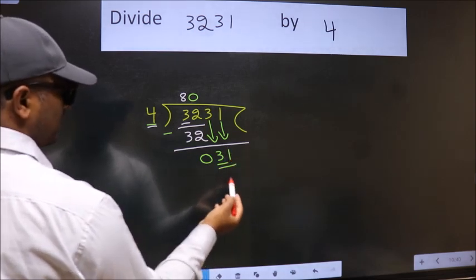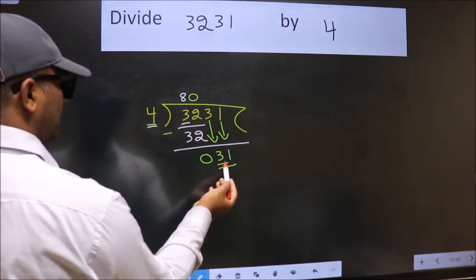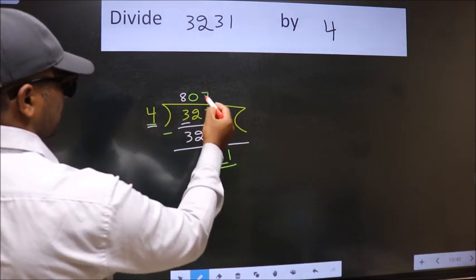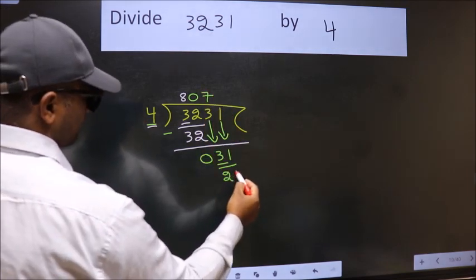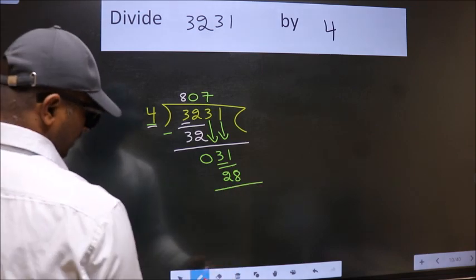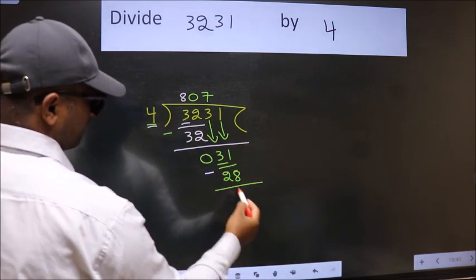So, 31. A number close to 31 in the 4 table is 4 sevens, 28. Now we subtract. We get 3.